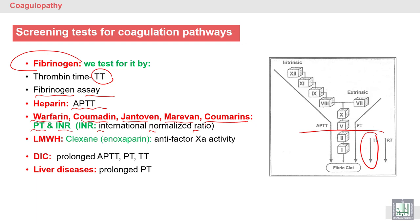Low molecular weight heparin, such as Clexane (enoxaparin), is a very important drug used today. Because it is low molecular weight — unlike unfractionated heparin — it acts on factor 10 and has no platelet functional disorder. Its complications are lower than unfractionated heparin, making it the better option.